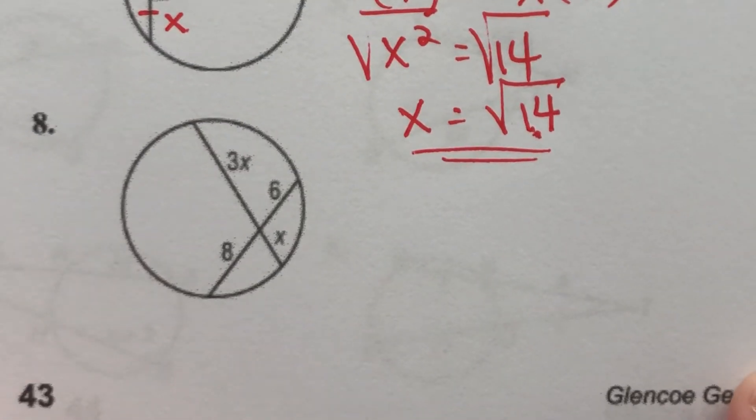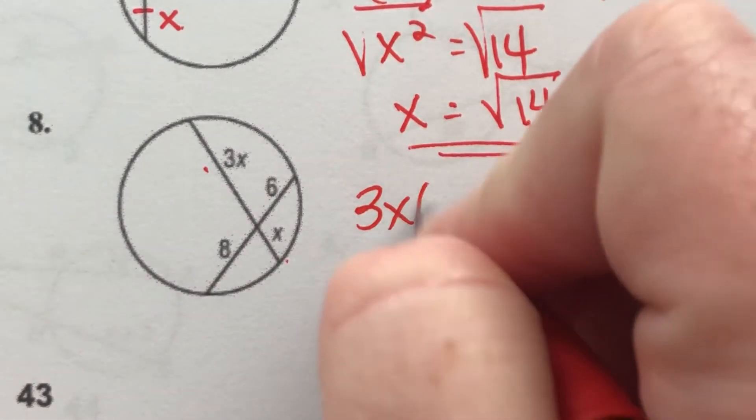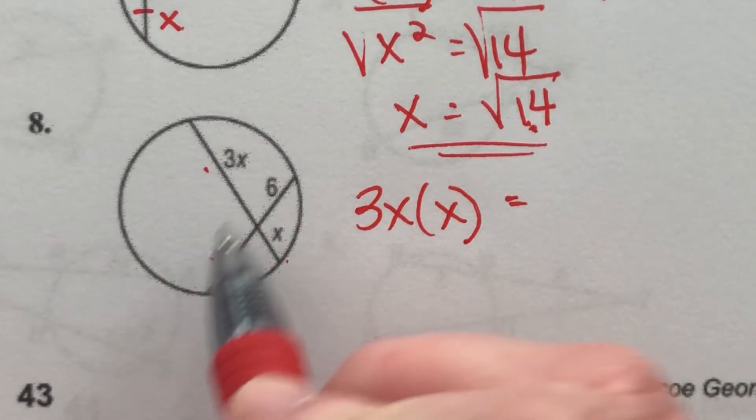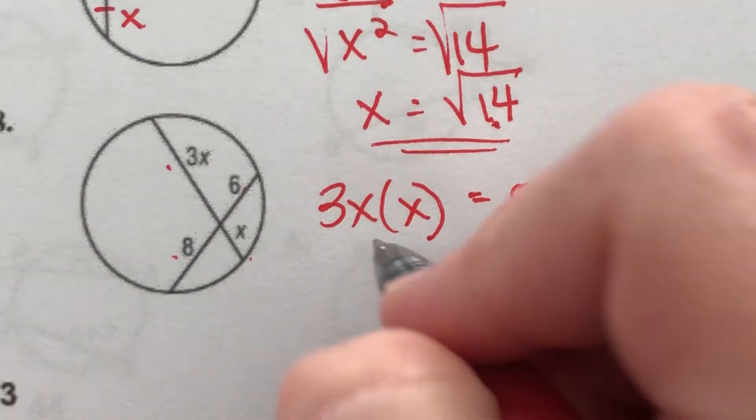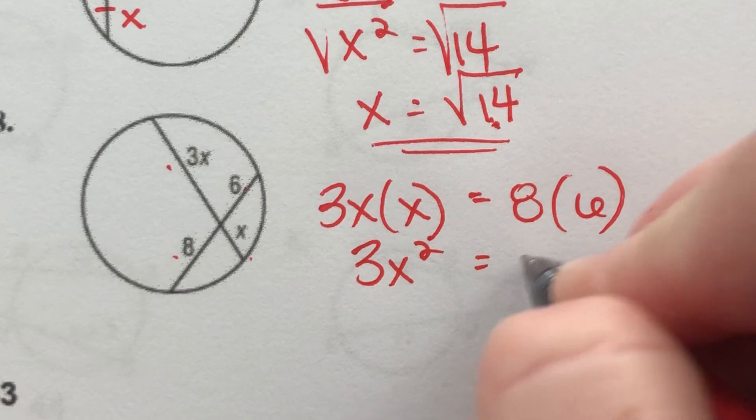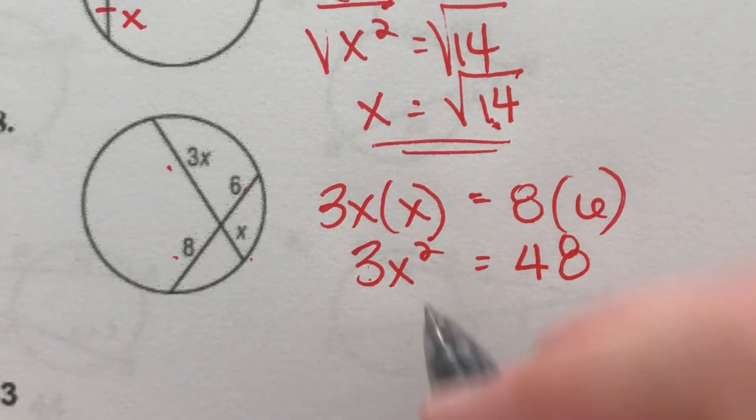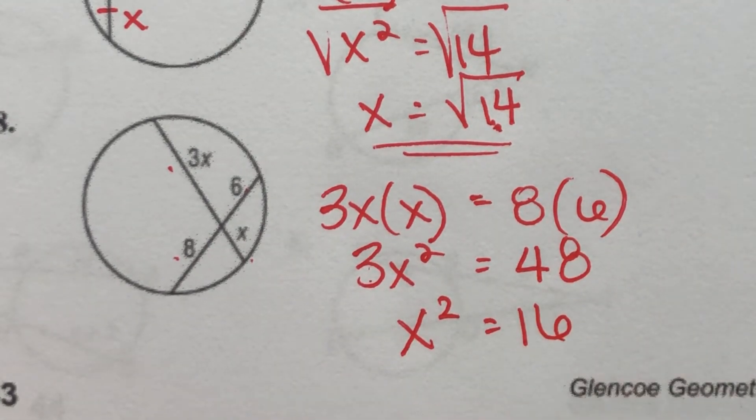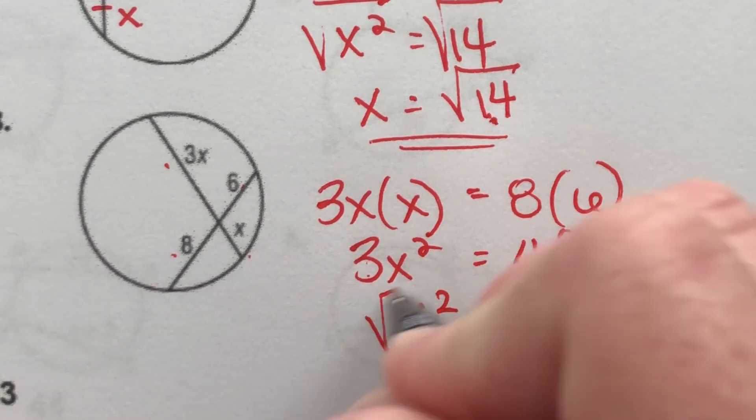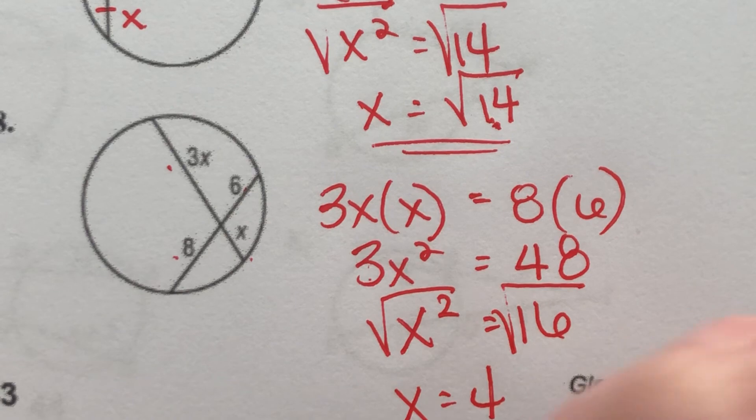And lastly, a normal one. 3X times X is equal to 8 times 6. So that's 3X squared is equal to 48. Divide both sides by 3. X squared equals 16. And 16 is a perfect square. So when we take the square root of both sides, I get X equals 4.